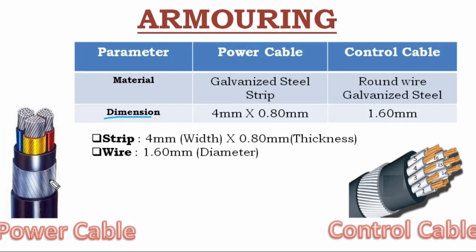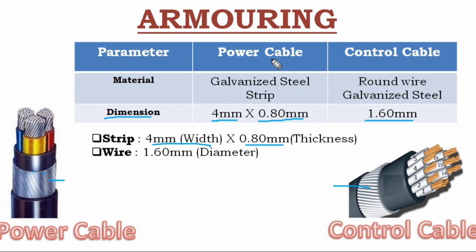The armor dimensions are: for the power cable, 4 mm width by 0.8 mm thickness — it is a flattened strip, so width and thickness are specified. For the control cable, the round wire diameter is 1.60 mm. Hence the power cable armor is specified as 4 mm × 0.8 mm, and the control cable armor wire diameter is 1.60 mm.